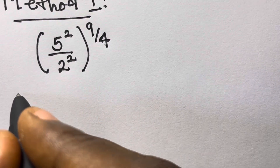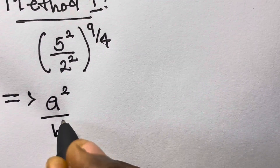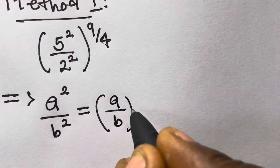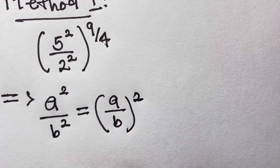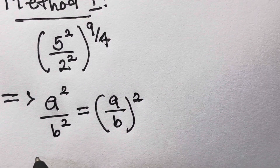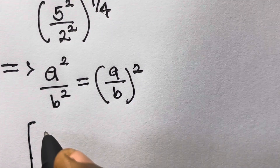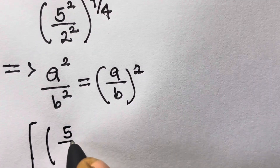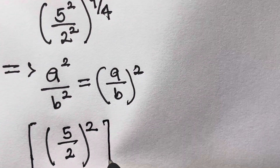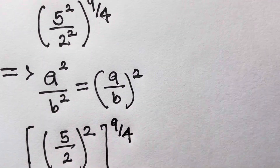From here, where we have a raised to the power 2 divided by b raised to the power 2, this equals a divided by b, squared. By applying this to the above expression we will have 5 divided by 2, squared, raised to the power 9 divided by 4.